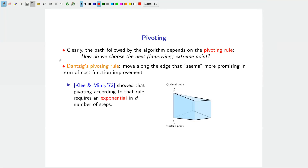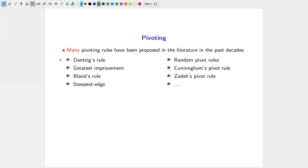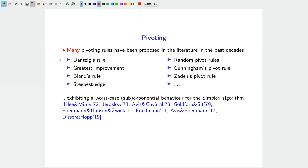However, Klee and Minty in the 1970s showed that pivoting according to Dantzig's rule might require an exponential number of steps in the dimension of the polytope. They achieved this by taking a d-dimensional hypercube, perturbing it slightly, and showing exponential behavior. Many other pivoting rules have also been proposed: greatest improvement, Bland's rule, steepest edge, random pivot, Cunningham's rule, and others.